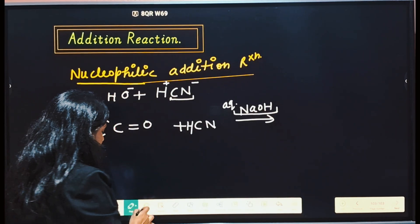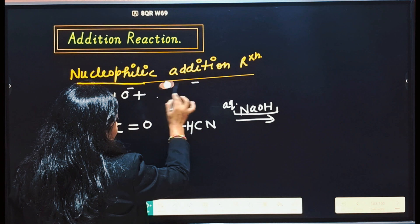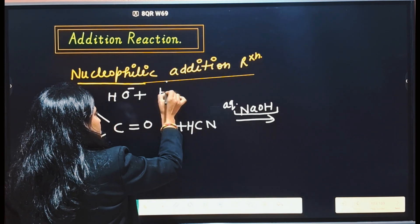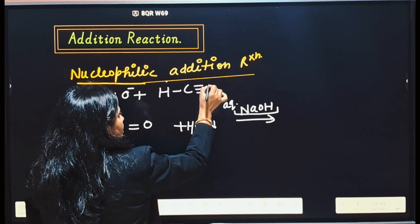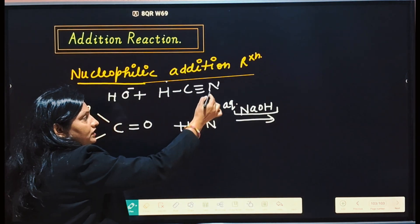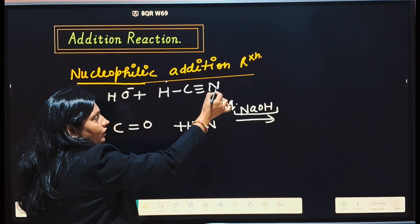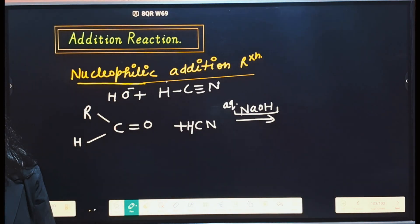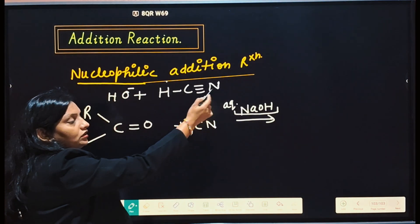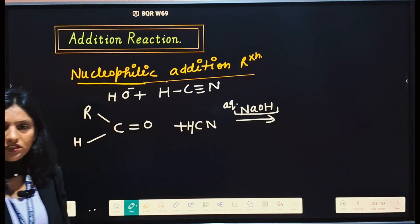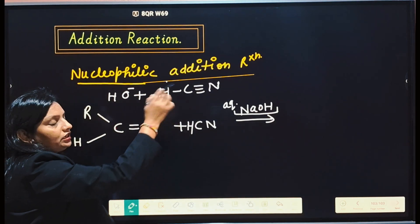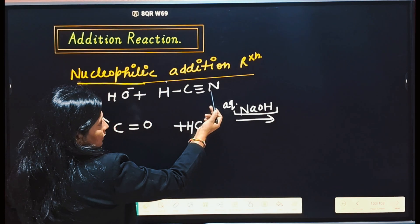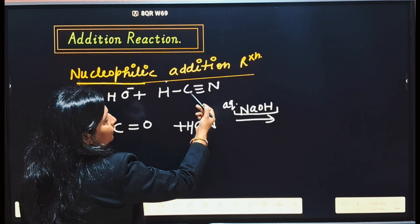If it attracts electrons towards itself, then a positive charge will be attained on one part and negative on the other. If I write it as H-C≡N — carbon has valency 4 forming 4 bonds, nitrogen has valency 3 forming 3 bonds, hydrogen valency 1 forming only 1 bond. Because nitrogen is more electronegative than carbon, it will attract electrons towards itself.